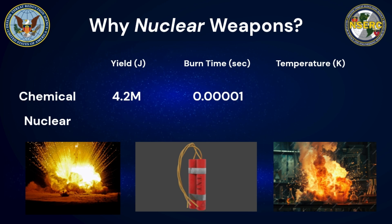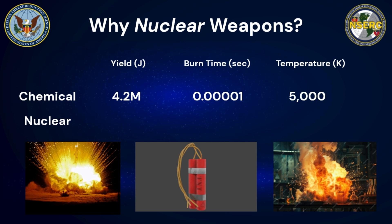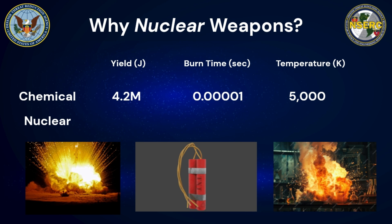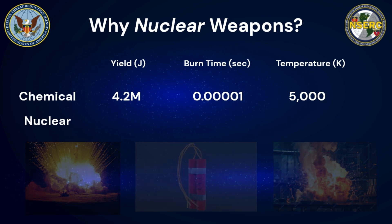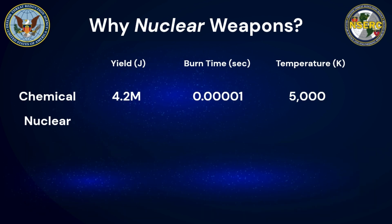Lastly, typical temperatures for the hot gases created from a chemical explosion reach around 5,000 degrees Kelvin. If you consider the human body as only 310 Kelvin, and the melting point of steel is around 1,800 Kelvin, it's clear that chemical explosions get extremely hot — hot enough to instantaneously change a solid to a gas.